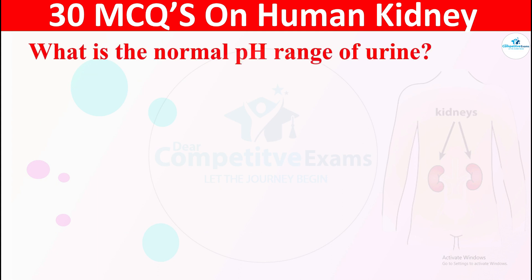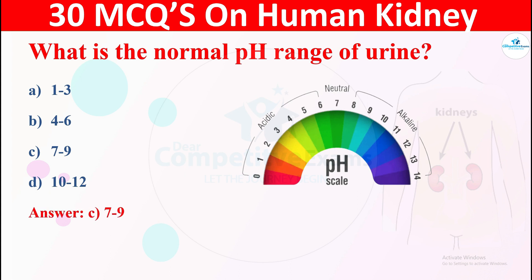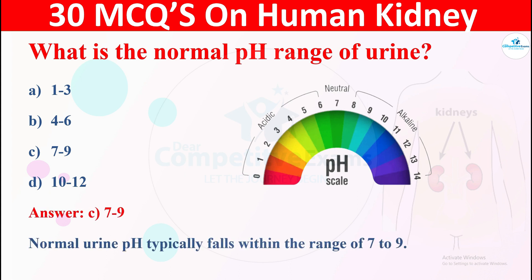Question 13: What is the normal pH range of urine? The options are: A) 1 to 3, B) 4 to 6, C) 7 to 9, or D) 10 to 12. The right answer is 7 to 9. The normal urine pH typically falls within the range of 7 to 9.